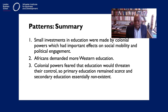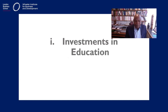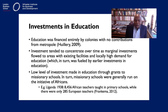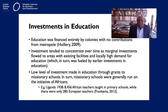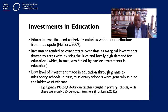Colonial powers feared that education would threaten their control, so primary education remained very scarce. The education investments were made with no contribution from the metropole, and investment tended to concentrate over time, flowing to areas where existing facilities and locally high demand for education already existed.